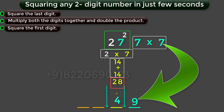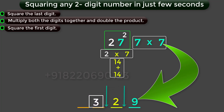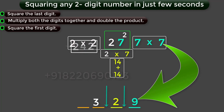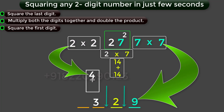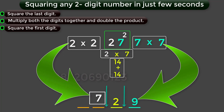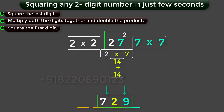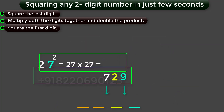Now, add this 28 to the digit 4, you will get 32. In this 32, the 2 becomes the middle part of the answer, and the 3 moves to the first part of the answer. Next, find the square for the first digit 2, you will get 4. Add this 4 to the digit 3, you will get 7. This 7 becomes the first part of the answer. Combine all these digits together, you will get the number 729, which is the square of 27.